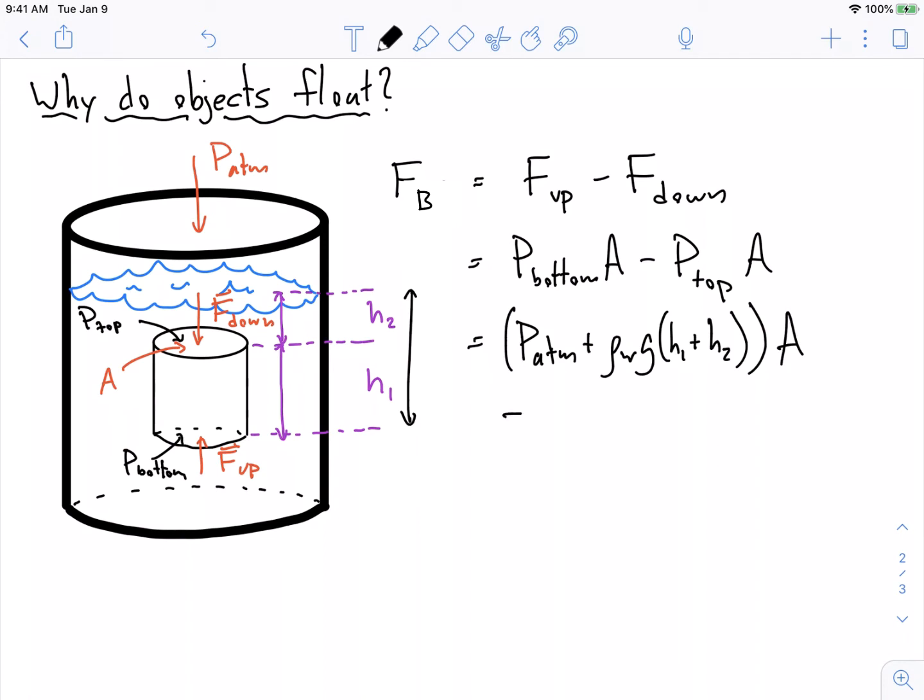What's the pressure on the top? The pressure on the top is atmospheric pressure. That's still acting up there, plus the density of the fluid, times gravity, times the height. And what's the height? Well, it's just this height now. It's just H2 times A.